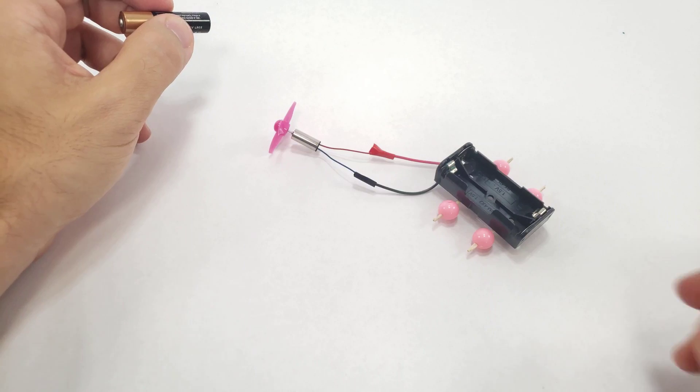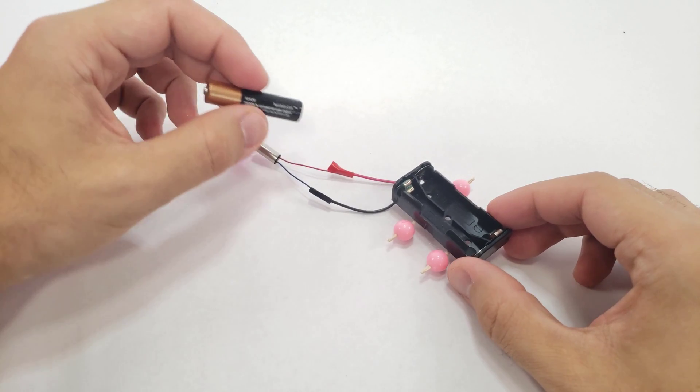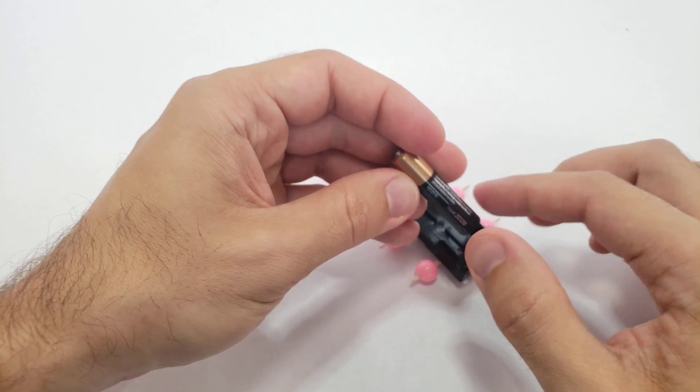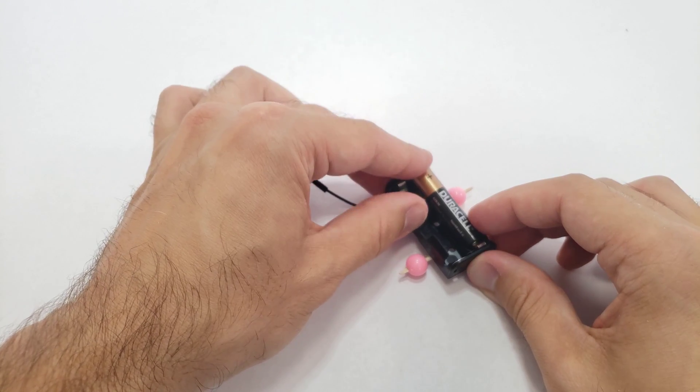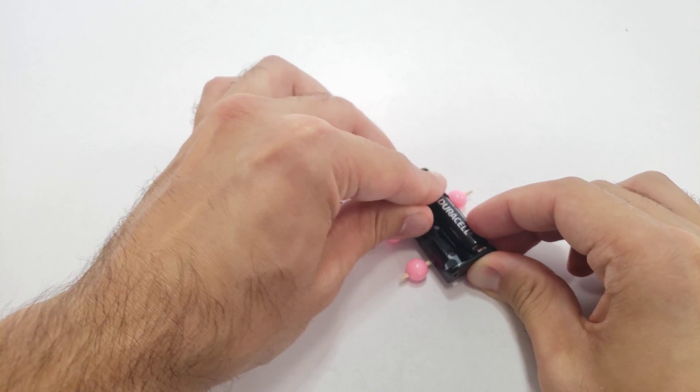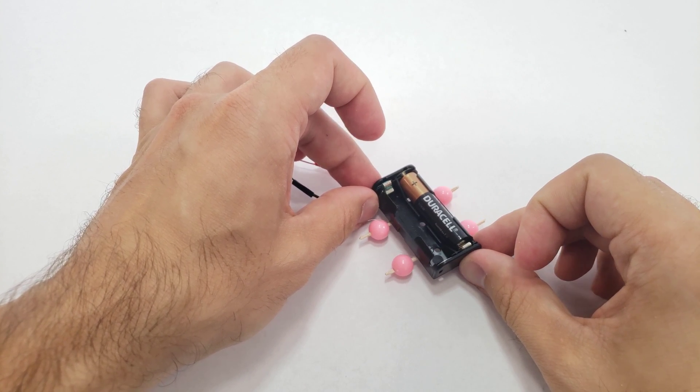Now, to make your life easier later, put one of the batteries, the one with the plus sign that goes towards the back of the car, into the battery holder. Look for the plus symbol inside the battery holder and make sure the plus signs line up.